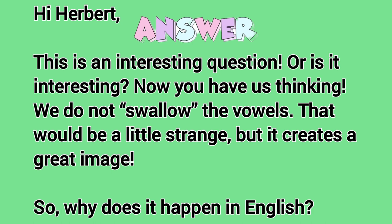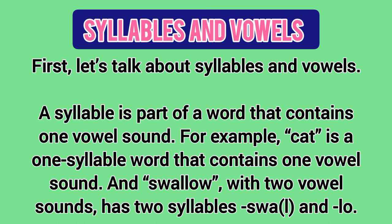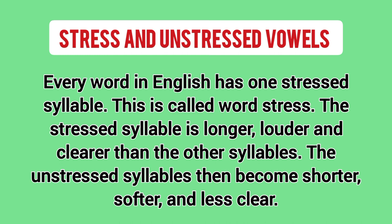So why does it happen in English? First, let's talk about syllables and vowels. A syllable is a part of a word that contains one vowel sound. For example, 'cat' is a one-syllable word that contains one vowel sound, and 'swallow,' with two vowel sounds, has two syllables: 'swall' and 'low.' Every word in English has one stressed syllable — this is called word stress. The stressed syllable is longer, louder, and clearer than the other syllables, which become shorter, softer, and less clear.